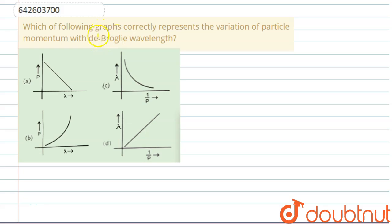Hello everyone, let's start this question. The question asks which of the following graphs correctly represents the variation of particle momentum with the De Broglie wavelength.